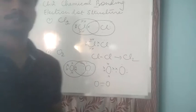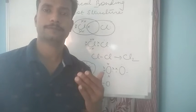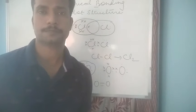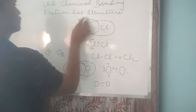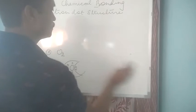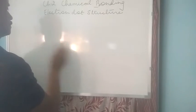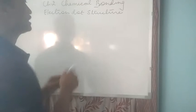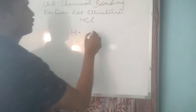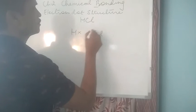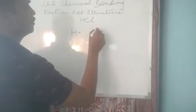Now we are going to see some covalent molecules where there are 2 different atoms present. Let us see. For example, HCl. As we know hydrogen has 1 electron and chlorine has 7 electrons. 1, 2, 3, 4, 5, 6, 7.